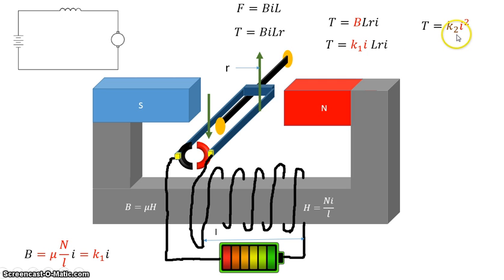So i times i gives me i squared. The torque developed by the motor is proportional to the current squared.